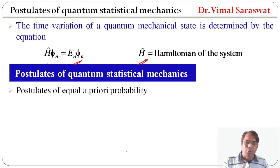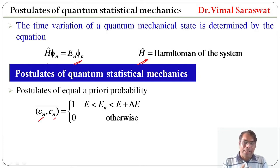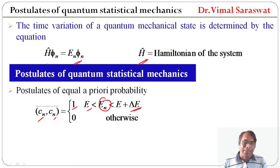The first postulate is the postulate of equal a priori probability. Here, c̄_n* c̄_m equals 1 when the energy E_n lies between E and E + ΔE; otherwise its value is 0.